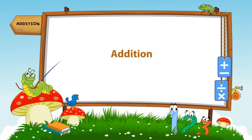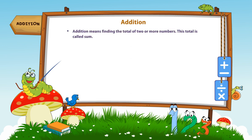Addition. Let's recall what we have learnt so far. Addition means finding the total of two or more numbers. This total is called sum.